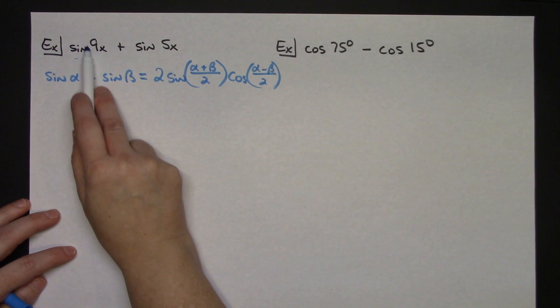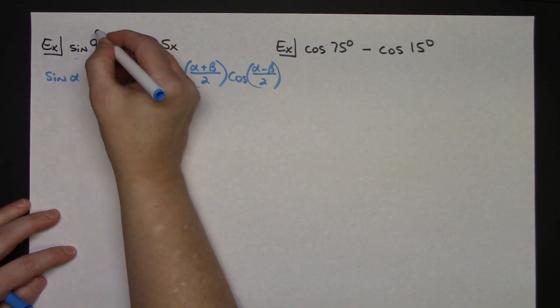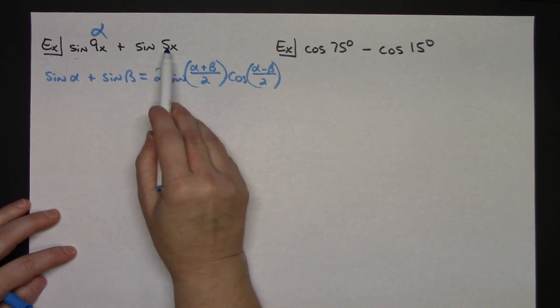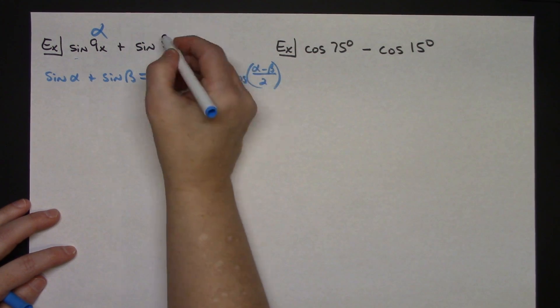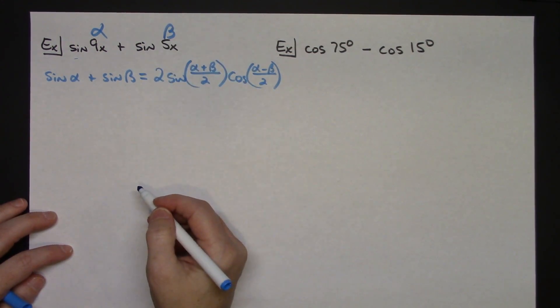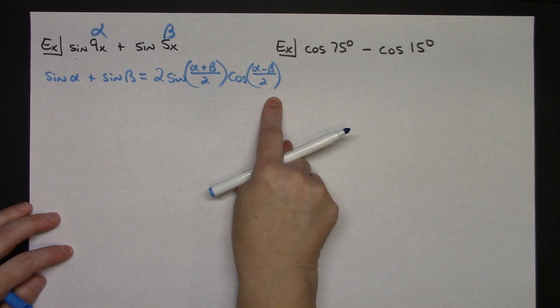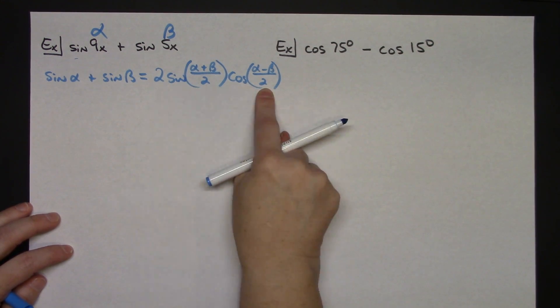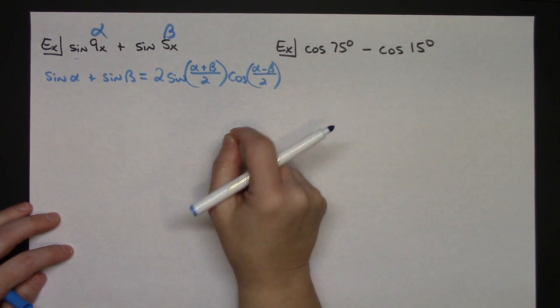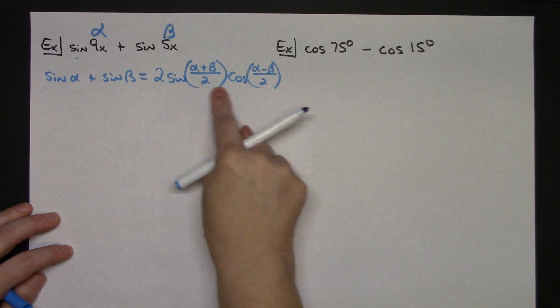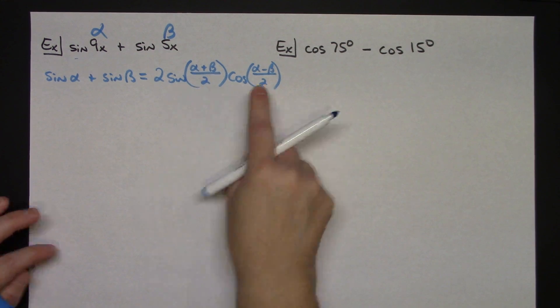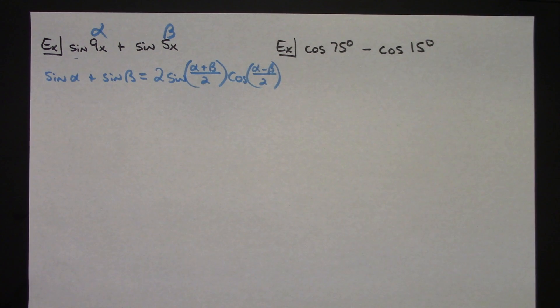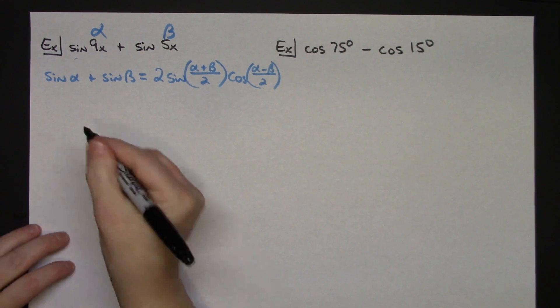I've got two sines right here and then this is what it's going to expand to. Now written just like this that 9x is going to be my alpha value and this 5x is going to be my beta value. So I'm going to follow the formula and I'm literally going to do a direct substitution and simplify as far as I can. So I'm going to be working with this right-hand side of the formula.